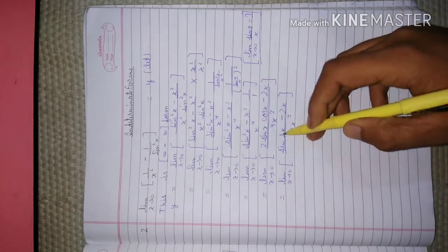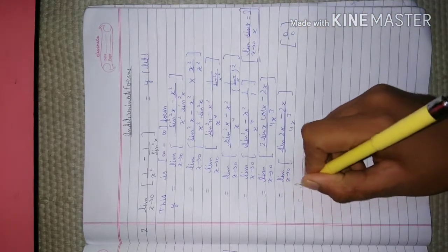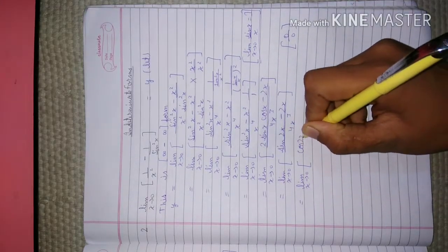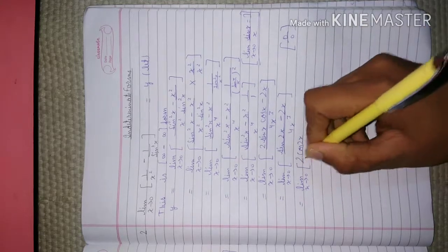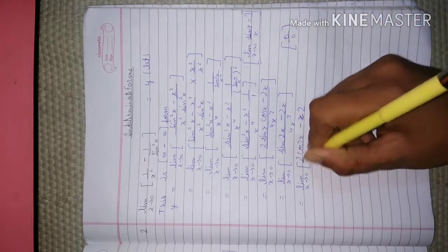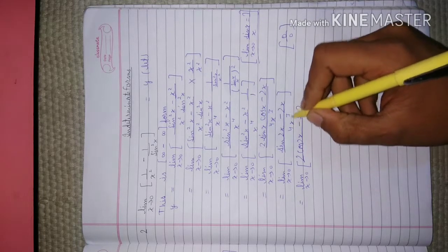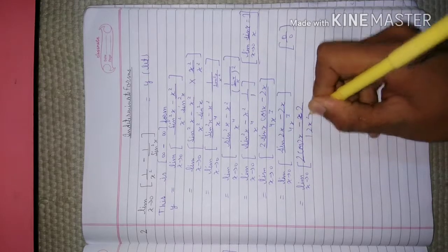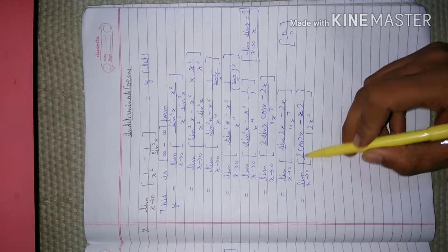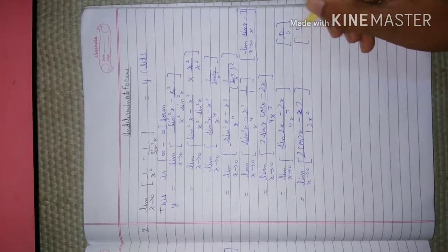We now have: (sin(2x) minus 2x) upon 4x³. When we put x equals to 0, it again becomes 0 by 0 form, so we apply the L'Hôpital rule again. Differentiating: the derivative of sin(2x) is 2cos(2x), minus 2, upon the derivative of 4x³ which is 12x². When we put x equals to 0: cos(0) is 1, so the numerator becomes 2 minus 2 equals 0, and denominator also becomes 0. This is again 0 by 0 form.